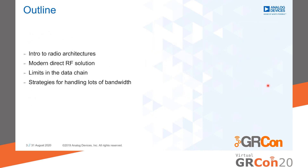Just a bit of outline of the talk. First, I want to give a little background on architectures of different radios, so everyone's on the same page when I talk about Direct RF. Then I'll introduce a modern Direct RF solution that I work on daily, just to bring some context and show some cool pictures of hardware. And then we'll move on into data paths and talk about how fast these devices really are, and the amount of data coming off of them. Then we'll discuss some strategies to help handle that high-speed data.